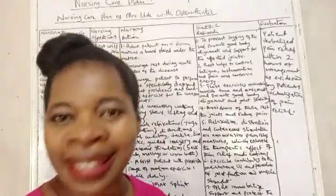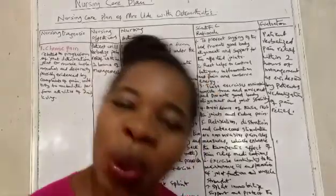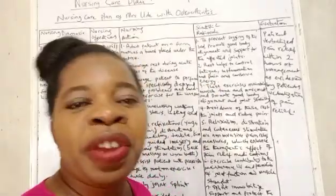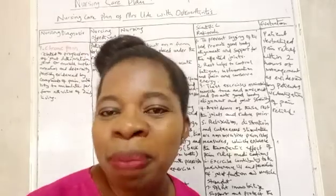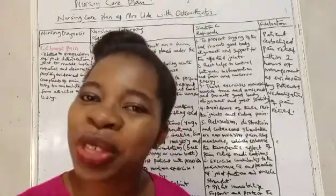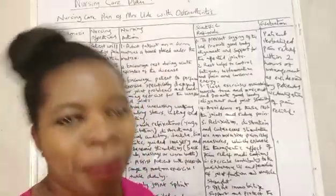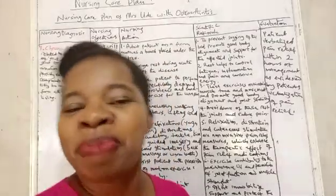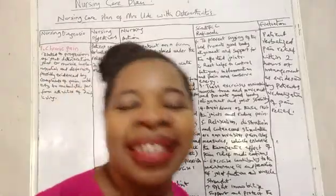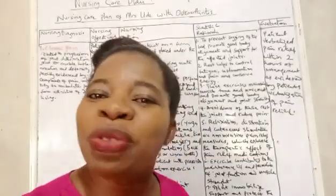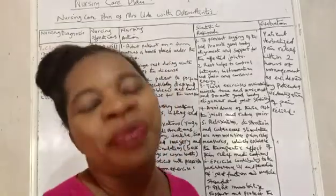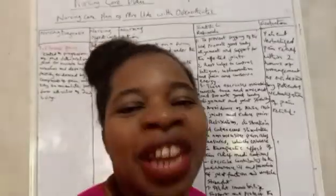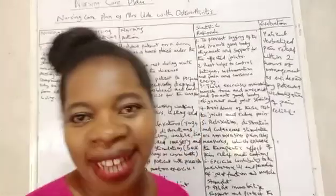Nursing action number nine: prepare the patient for arthroplasty or osteotomy if the pain is uncontrollable. Scientific rationale: arthroplasty replaces the deteriorated parts of the joint with a prosthetic appliance to restore movement and relieve pain. Osteotomy excises or cuts off a wedge of bone to correct joint deformity, promote realignment and relieve pain or stress.